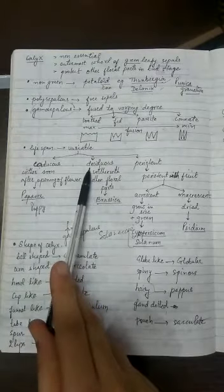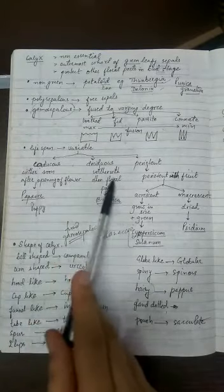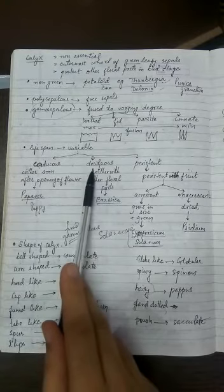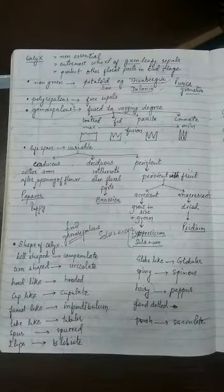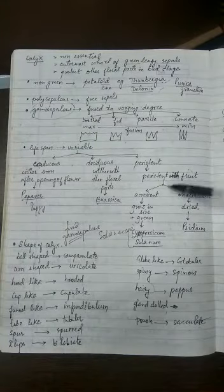In some plants the sepals wither along with the other floral portion. So in such categories it is called as deciduous, example Brassica. Persistent type is of two types again.